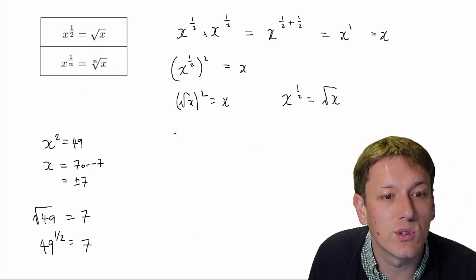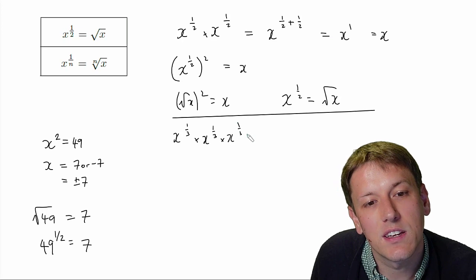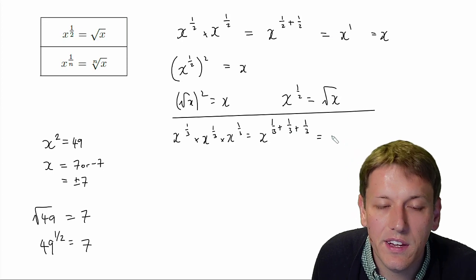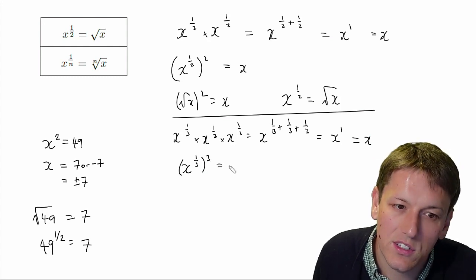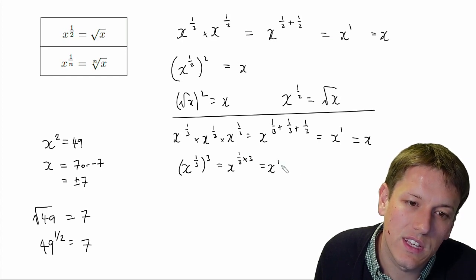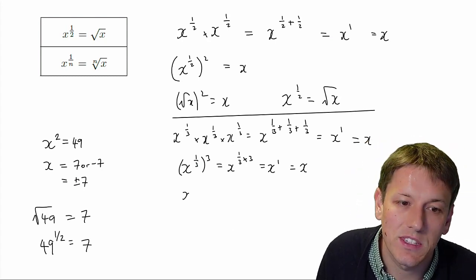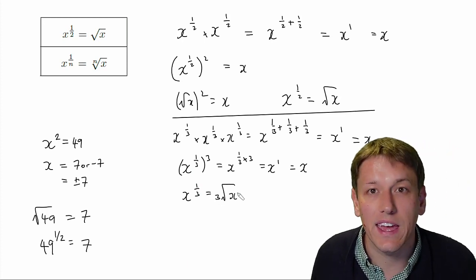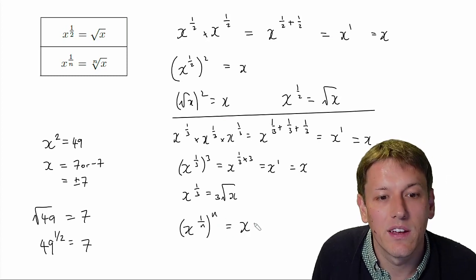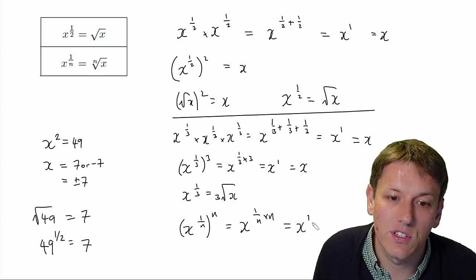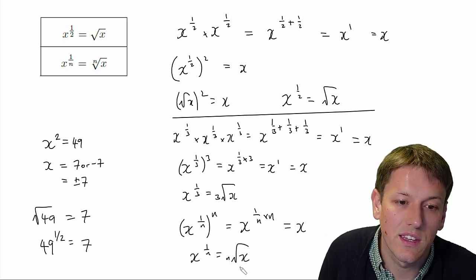For X to the 1 over N in general — let's think about X to the 1 third. If I multiply X to the 1 third by itself three times, I get X to the 1 third plus 1 third plus 1 third, which is X to the 1, or just X. Or using the multiplication rule, X to the 1 third cubed is X to the 1 third times 3, which is X to the 1, which is X. So X to the 1 third is a number that when multiplied by itself three times gives X — so X to the 1 third must be the cube root of X. Using the same argument for any power, X to the 1 over N raised to the Nth power gives X to the 1 over N times N, which is X to the 1, or just X. So X to the 1 over N equals the Nth root of X.